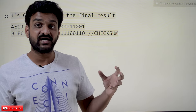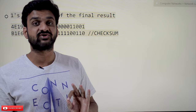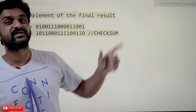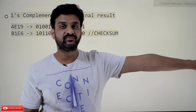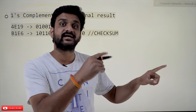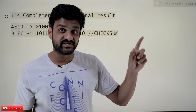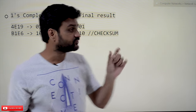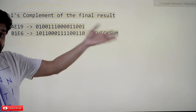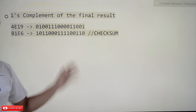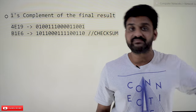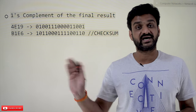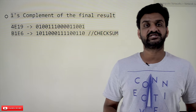Now, how does the destination verify whether the received header is correct or corrupted? At the destination, the header checksum field value 'B1E6' is set aside and that field is replaced with all zeros. The same algorithm — grouping into 16-bit words, summing, and taking the one's complement — is applied at the destination. If the result matches the received checksum value, the packet is accepted. Otherwise, it indicates an error and the packet is discarded.